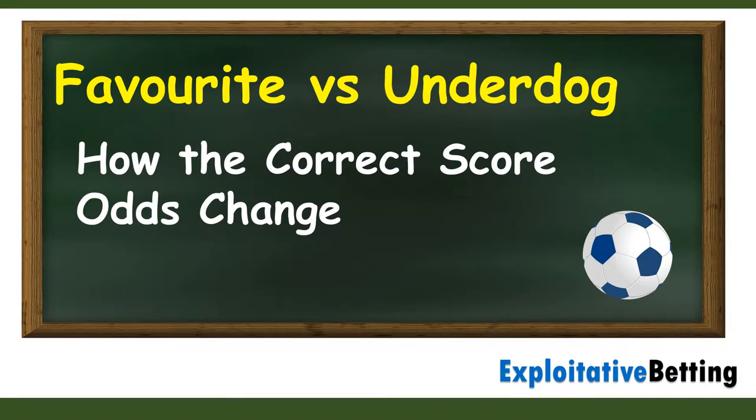Hi, Artemis Paint here. Trading current scores is a popular method. In this video I'll explain how the current scores change in a football match when the two teams are equally matched. This video is not meant as a system, it's just meant to describe how odds change throughout a football match.